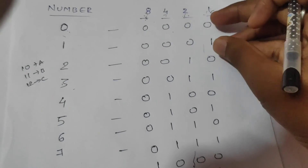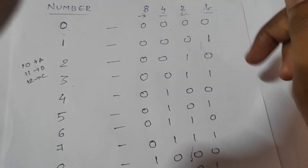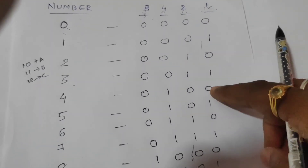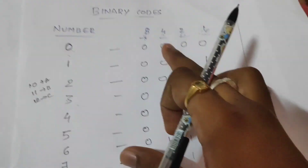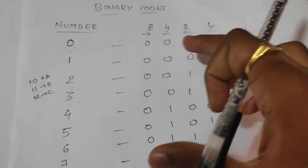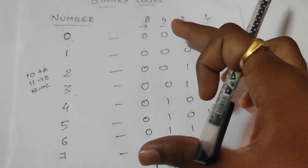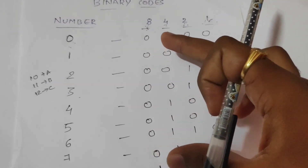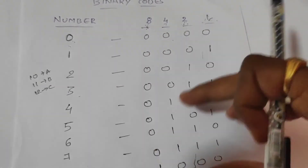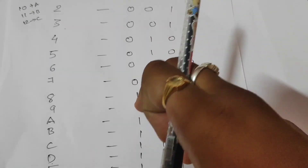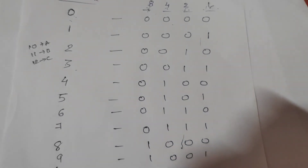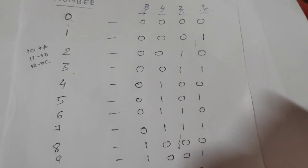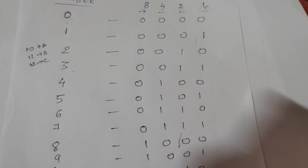So the pattern for the last bit alternates: 0, 1, 0, 1... across all 16 values. The numbers continue: 10, 11, 12, 13, 14, 15, 16, 17, 18, 19, representing the hexadecimal and decimal sequence.